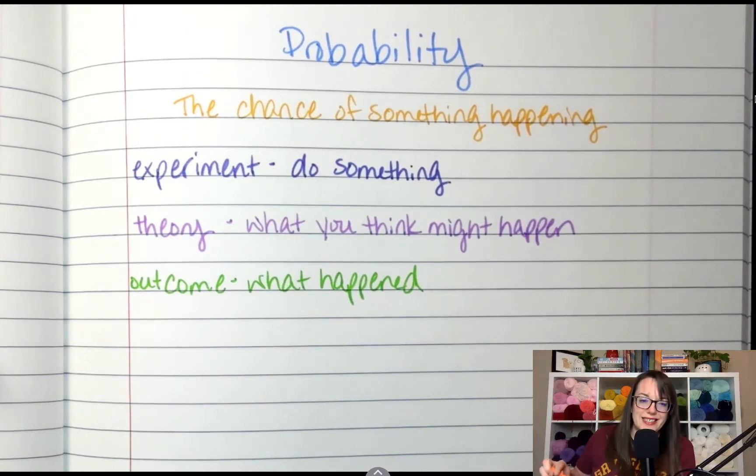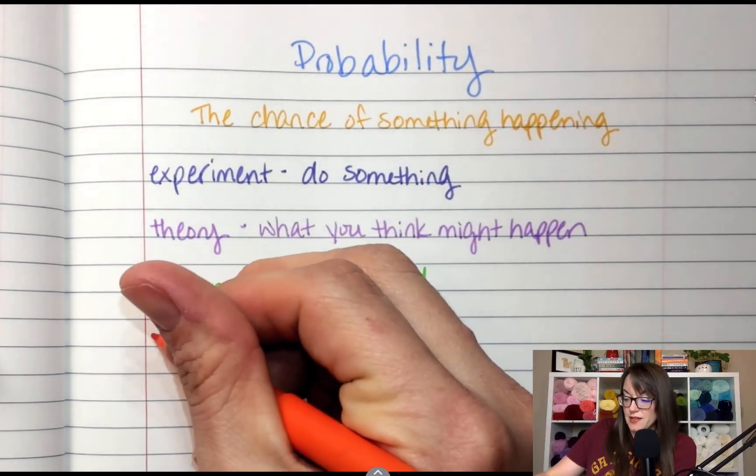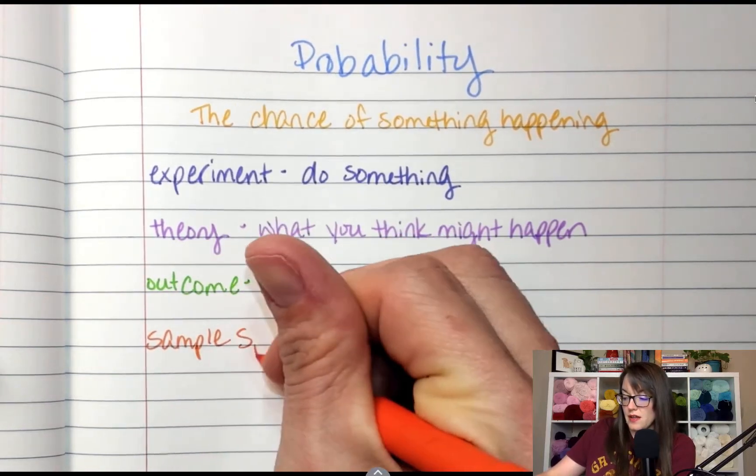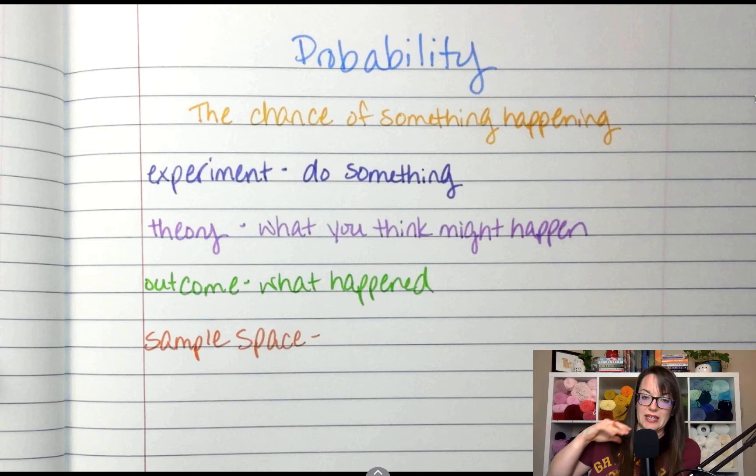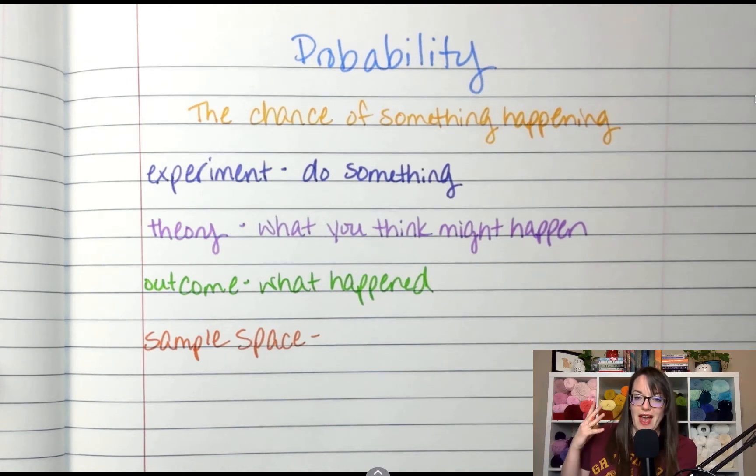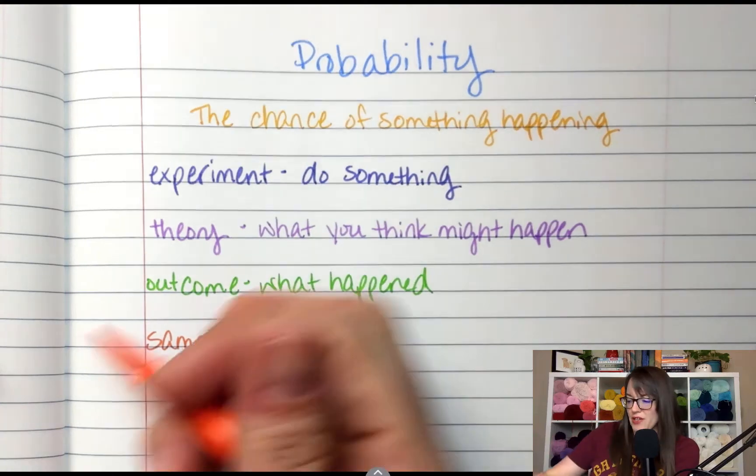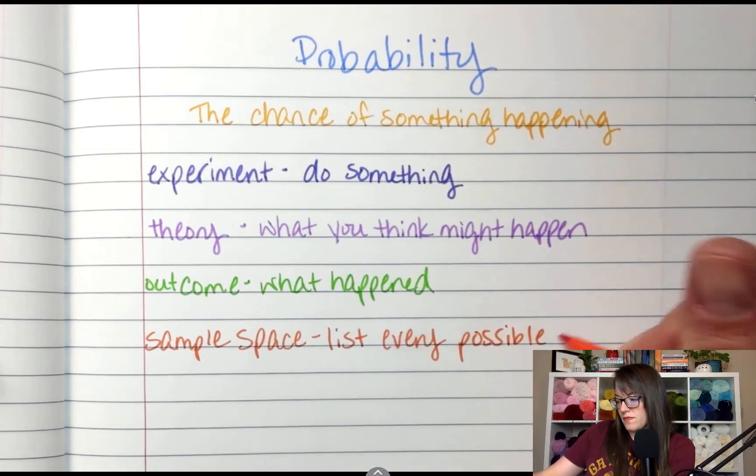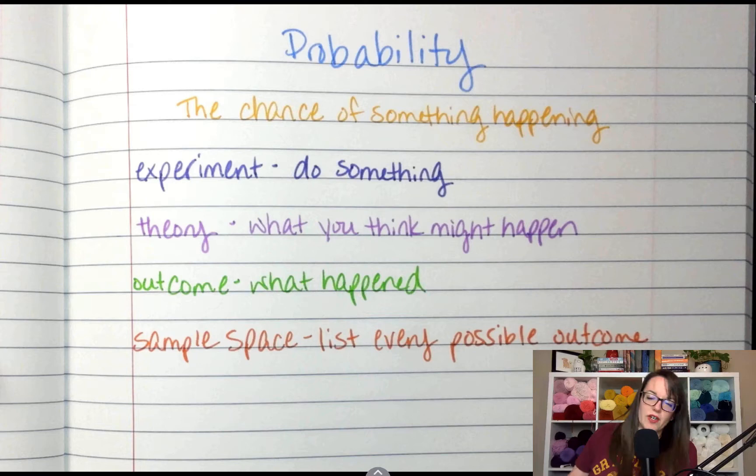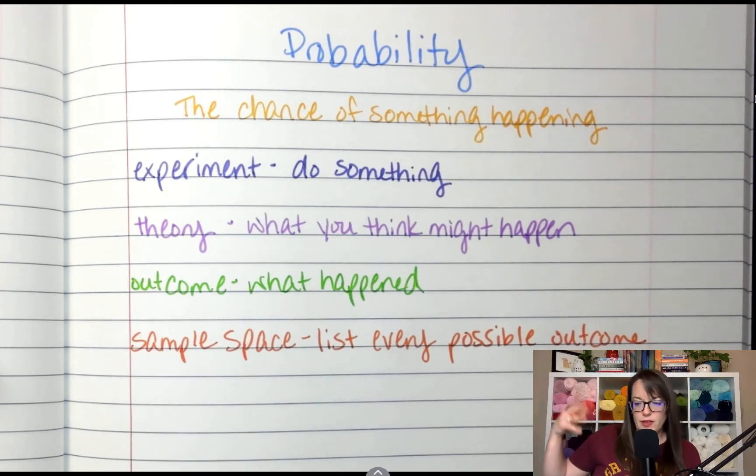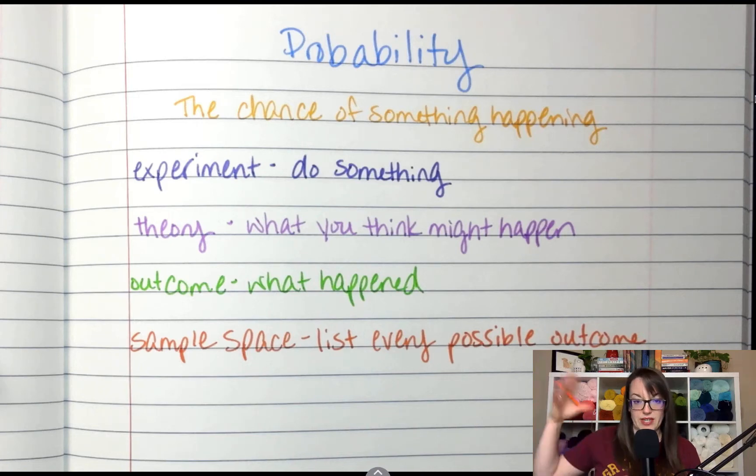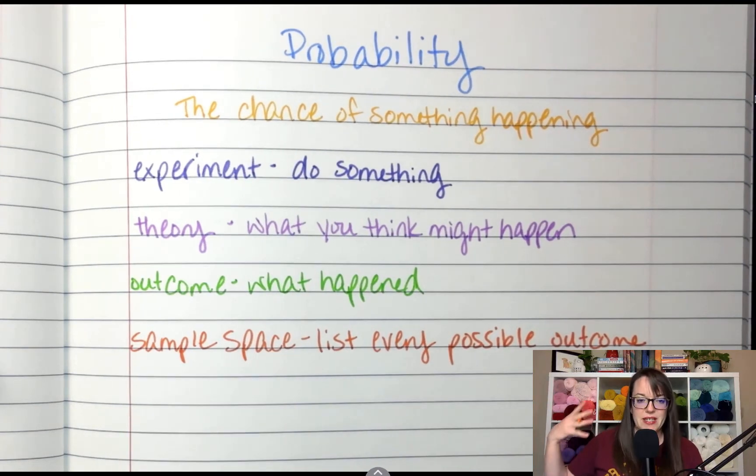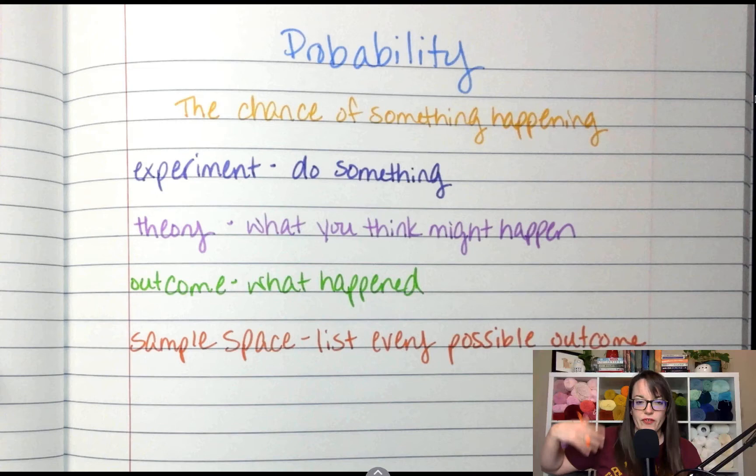And then I love doing these. There's something called a sample space. And a sample space is where you list every possible outcome, every possible combination. So if you've ever heard like the Sonic commercials where they talk about like there's X million numbers of combinations of drinks, with all their different flavors you can add, that's a sample space. Somebody sat down and created the mathematical list of all the different kinds of Sonic drinks that you can create. And that's a sample space.